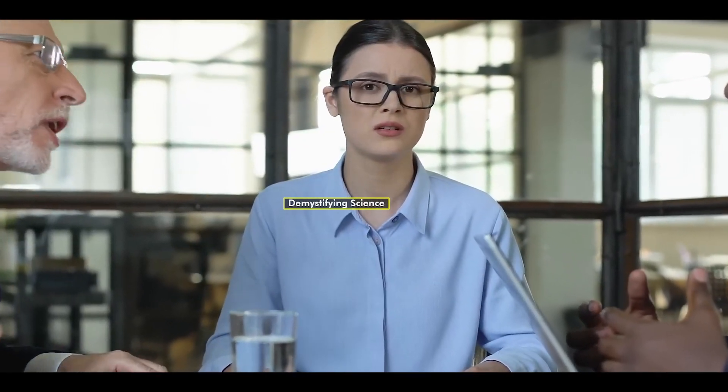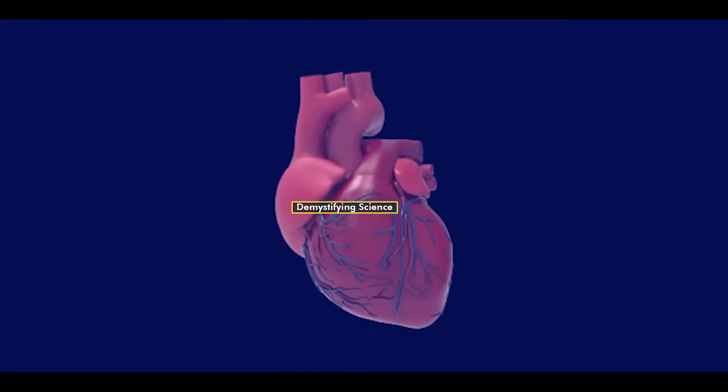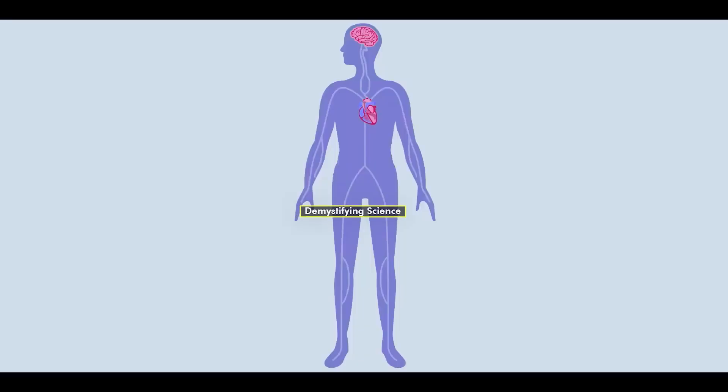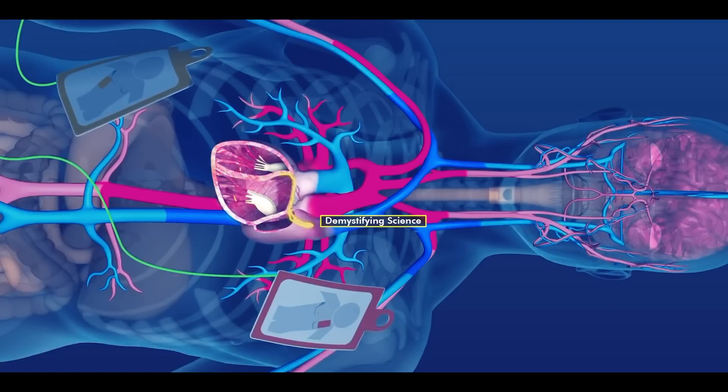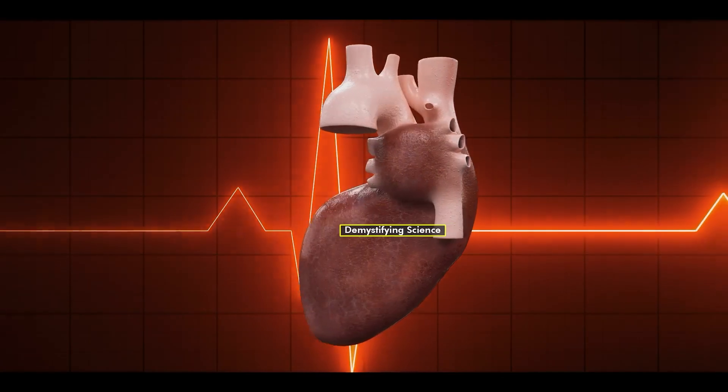When and why is defibrillation treatment done? The heart is a muscular organ that delivers oxygenated blood to the body's cells. Within the heart, the sinoatrial nodes generate natural electric impulses, keeping the heartbeat normal.